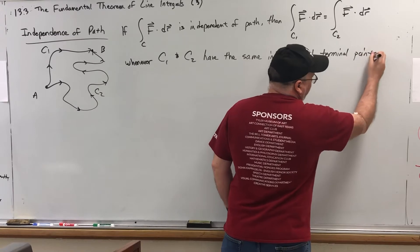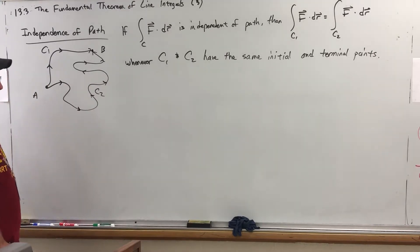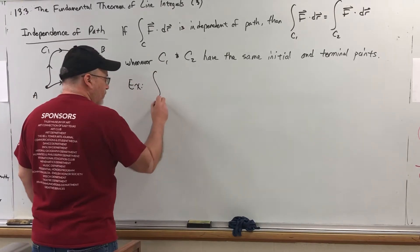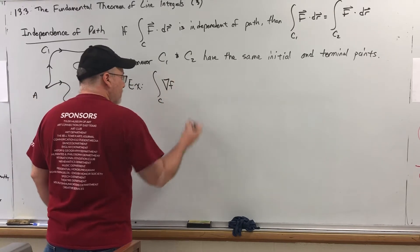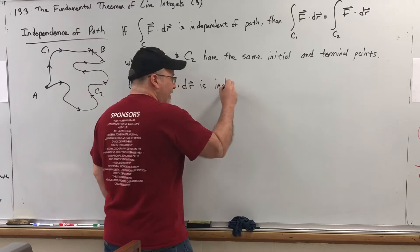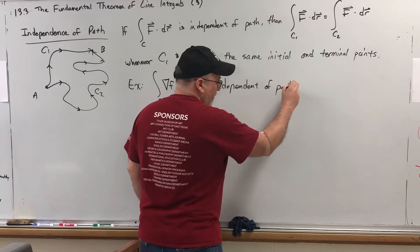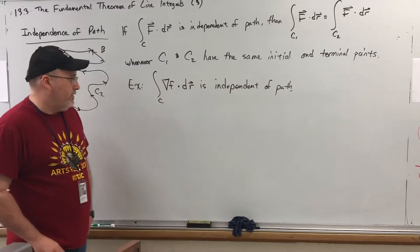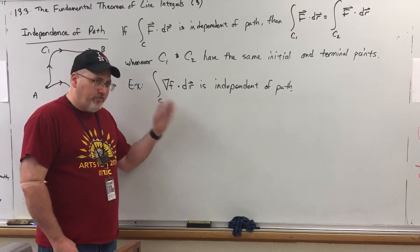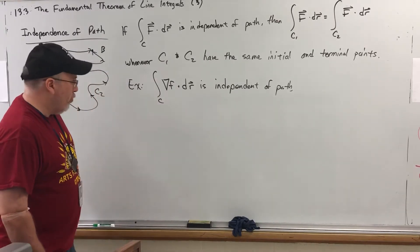And we've already seen an example of this in previous videos concerning the fundamental theorem of line integrals. So, for example, the line integral over a curve C of the gradient of some scalar function dot dr is independent of path. Because, as we just saw in previous two videos, the value of this integral only depends upon the initial and terminal points of the path. It did not say anything about how the path went, only where it began and where it ended.